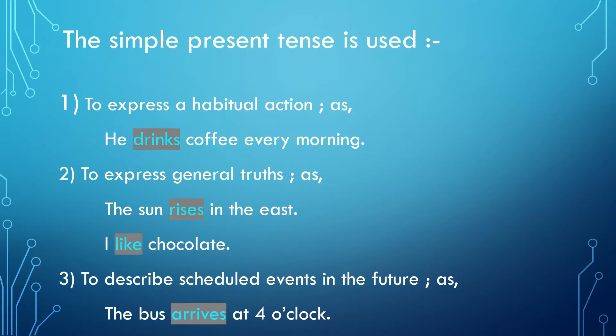Simple present tense is used to express the idea that an action is repeated or usual. The action can be a habit, a hobby, or a daily event. For example: 'He drinks coffee every morning.' This statement expresses a habitual action, and the verb 'drinks' is in the simple present tense.